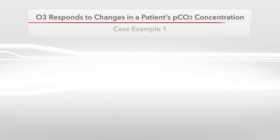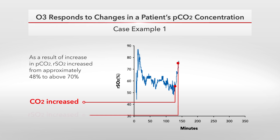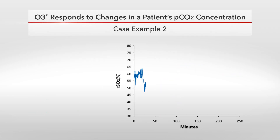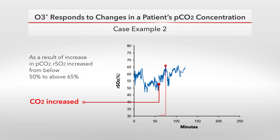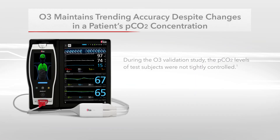In this clinical case, PCO2 was increased at approximately 120 minutes. As a result of the increase in PCO2, RSO2 increased from approximately 48% to above 70%. In a second clinical case, PCO2 was increased at approximately 60 minutes. As a result of the increase in CO2, RSO2 increased from below 50% to above 65%. During the O3 validation study, the PCO2 levels of test subjects were not tightly controlled.